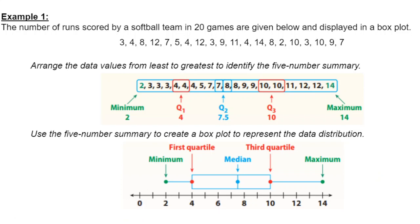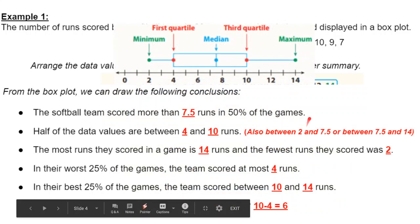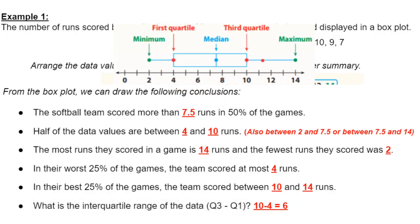This is still example one, so I moved the box plot that was created up to the top, and we're going to run through the different pieces of information we got from the box plot. You find that the softball team scored more than 7.5 runs in 50% of the games. You know that because 7.5 was the median. Median is half, middle, and if you're looking at 100% of the data, half of that is 50. So they scored more than 7.5 in 50% of the games, and less than 7.5 in the other 50% of the games.